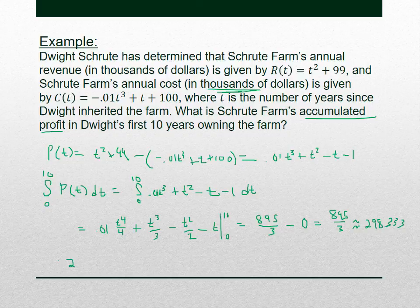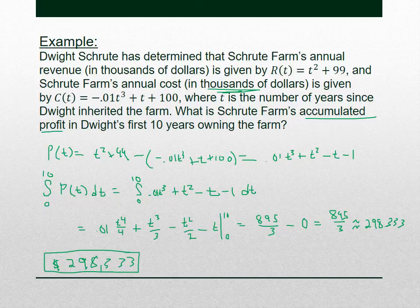Remember this is in thousands of dollars, so in 10 years the accumulated profit that Dwight makes is $298,333.